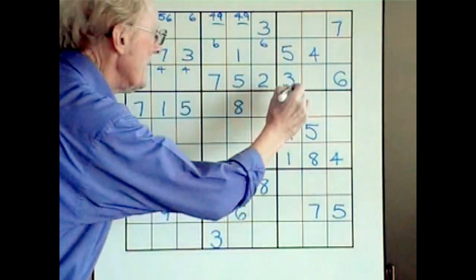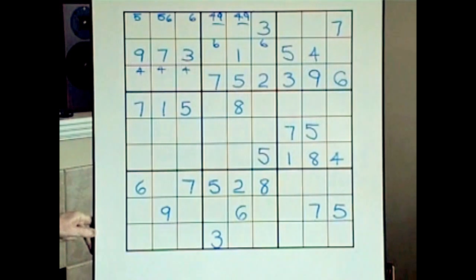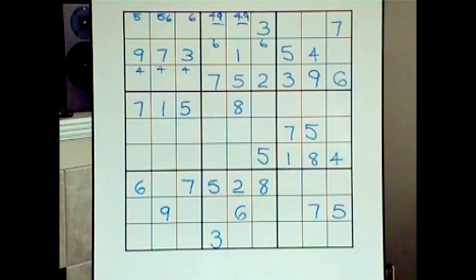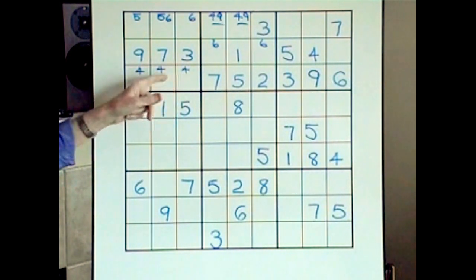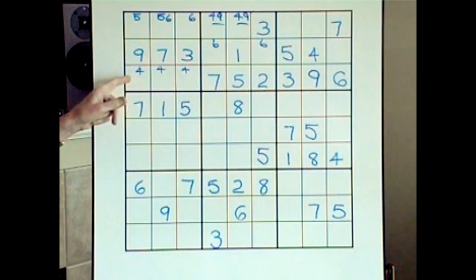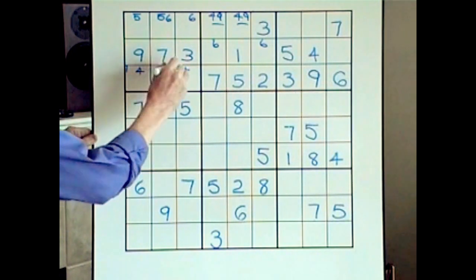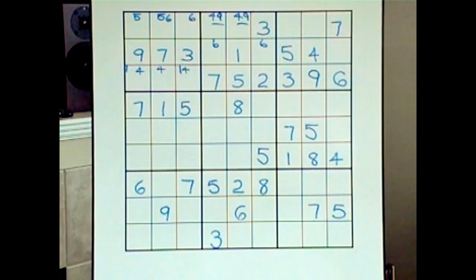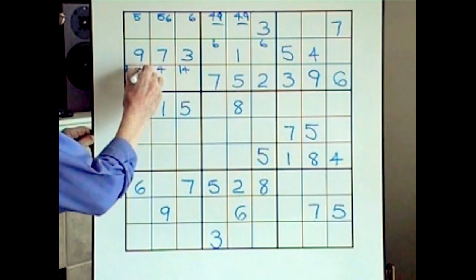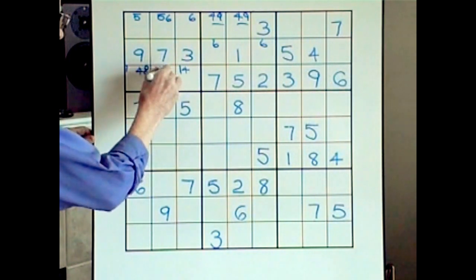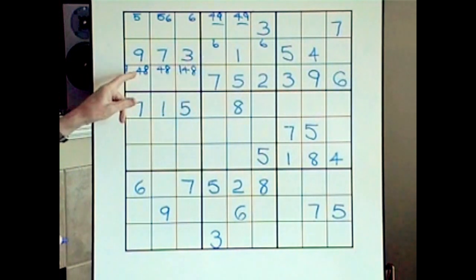Therefore this has to be a nine, so we've got another nine over there. Now at this stage I could fill in these three cells — there are two other numbers that can be in here. Let me see: it's a one. A one can't be a one in this one, so that's one, two, three, four, five, six, seven — and an eight. So a one and an eight.